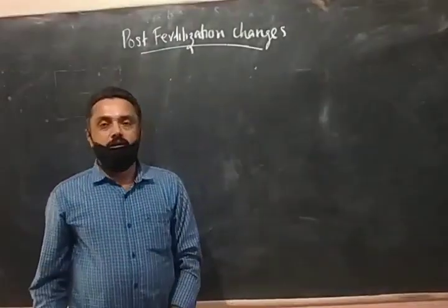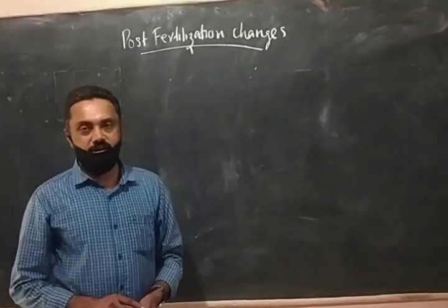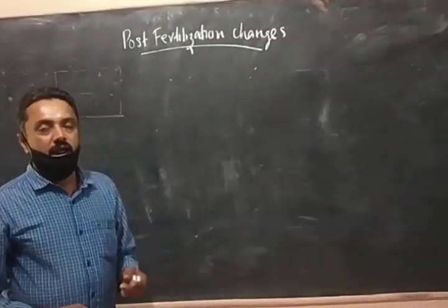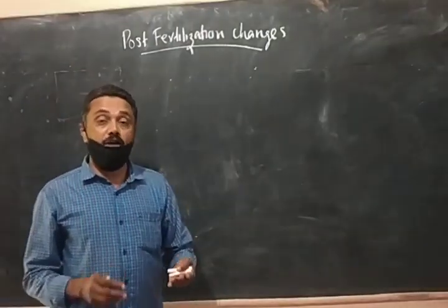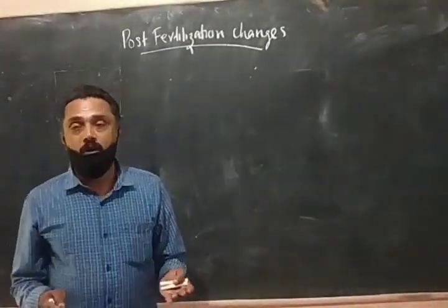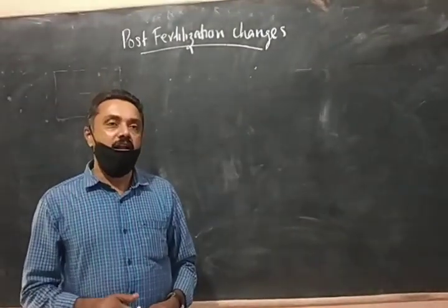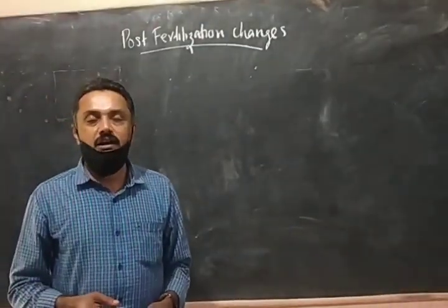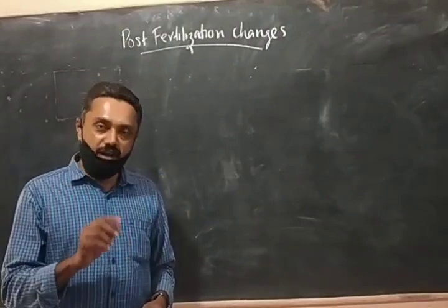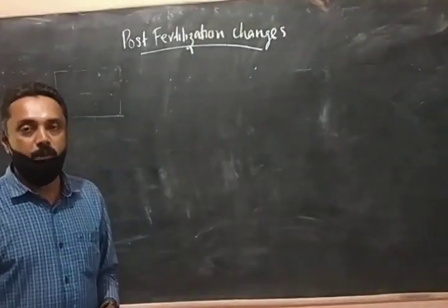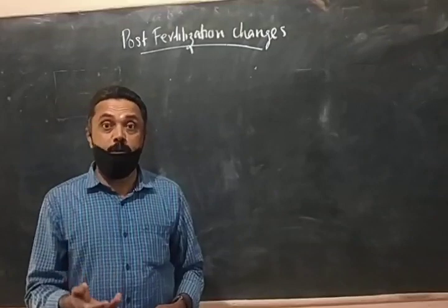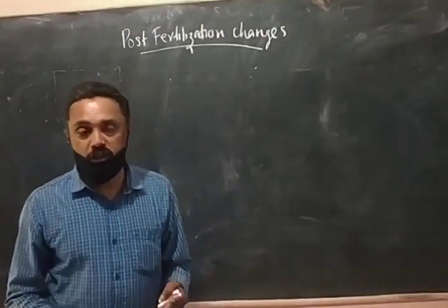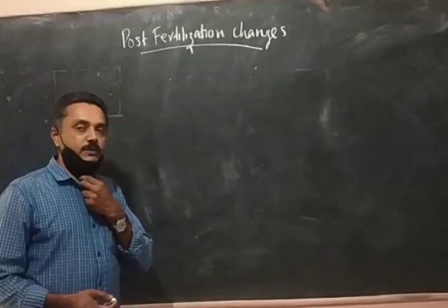Good afternoon. In the last class we have seen the fertilization changes, how it takes place in angiosperms. The process of joining male and female gamete is fertilization. Fertilization can be divided into two stages: syngamy and triple fusion. One of the male nuclei joins the egg cell — that process is called syngamy — resulting in a diploid zygote. The second male nucleus joins the secondary nucleus forming a triploid primary endosperm nucleus. Syngamy and triple fusion together are called double fertilization, which is a unique process in angiosperms.